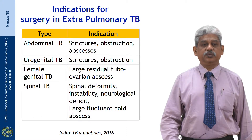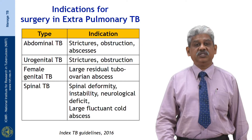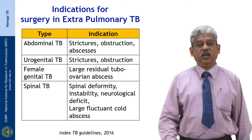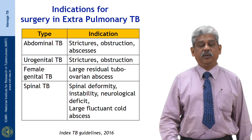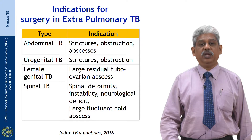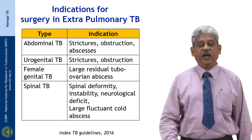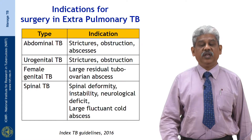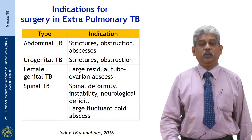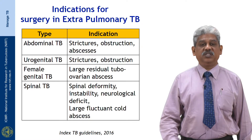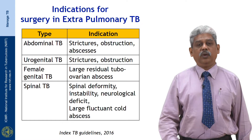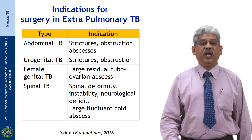The most important indication is spinal TB, where surgical management plays a major role. Even corrective surgeries can happen for severe spinal deformity. Most importantly, when a patient develops spinal paraparesis during active TB disease, you have to intervene and stabilize the spinal column before paraparesis develops, to prevent obstruction to the spinal cord. Additionally, when there is a very large paraspinal abscess, surgical drainage is required.